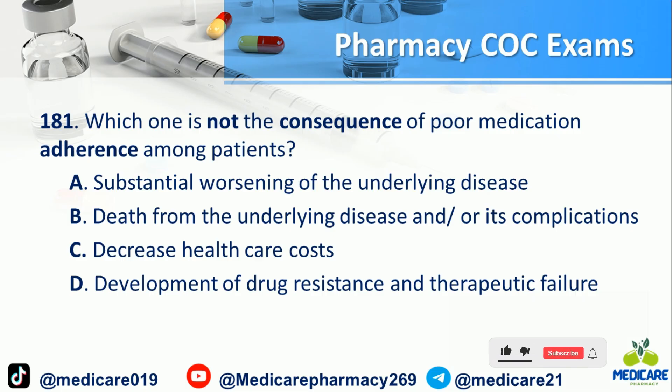Number 181: Which one is NOT a consequence of poor medication adherence among patients? A) Substantial worsening of the underlying disease. B) Death from the underlying disease and/or its complications. C) Decreased health care costs. D) Development of drug resistance and therapeutic failure.